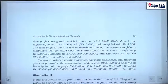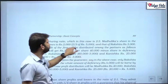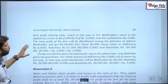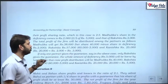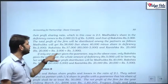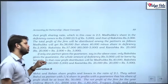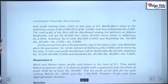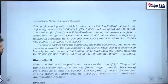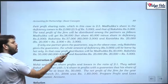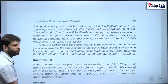The total profit of the firm is distributed as follows: Madhulika gets 38,000, Rakshita gets 57,000, and Kanishka gets 25,000. If only one partner gives the guarantee — say only Rakshita gives the guarantee — the whole deficiency of 5,000 will be borne by her alone. So Rakshita would get 60,000 minus 5,000 = 55,000, Madhulika keeps her 40,000, and Kanishka gets 25,000.